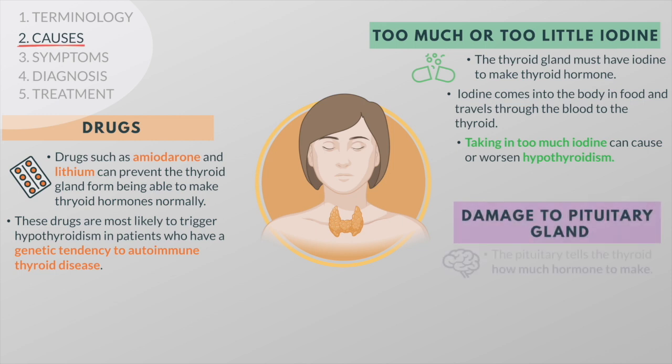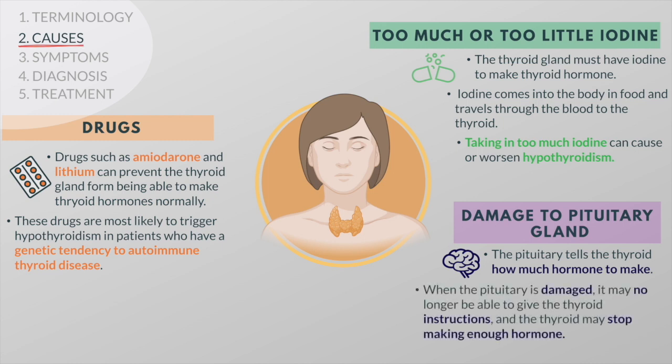The pituitary, or the master gland, tells the thyroid how much hormone to make. When the pituitary is damaged by a tumor, radiation, or surgery, it may no longer be able to give the thyroid the right instructions, and the thyroid may stop making enough hormone.